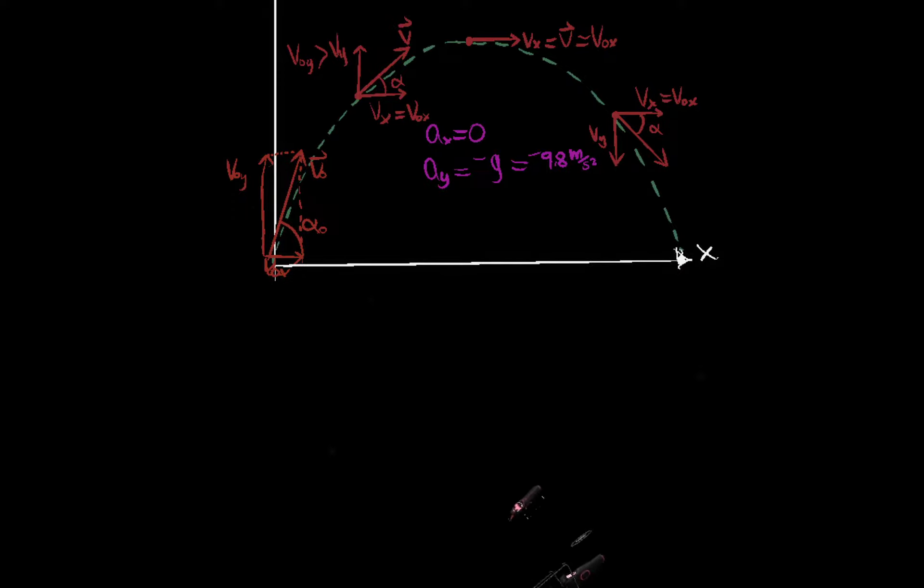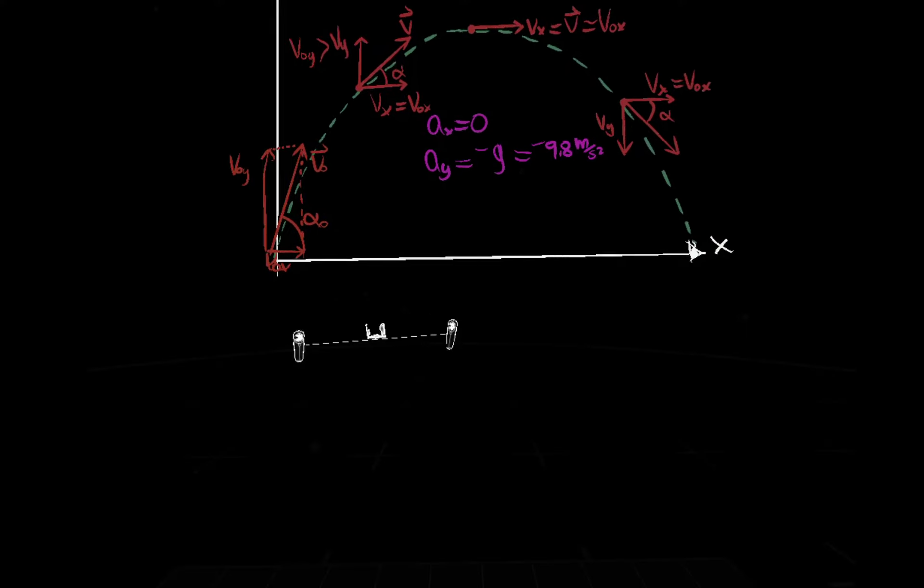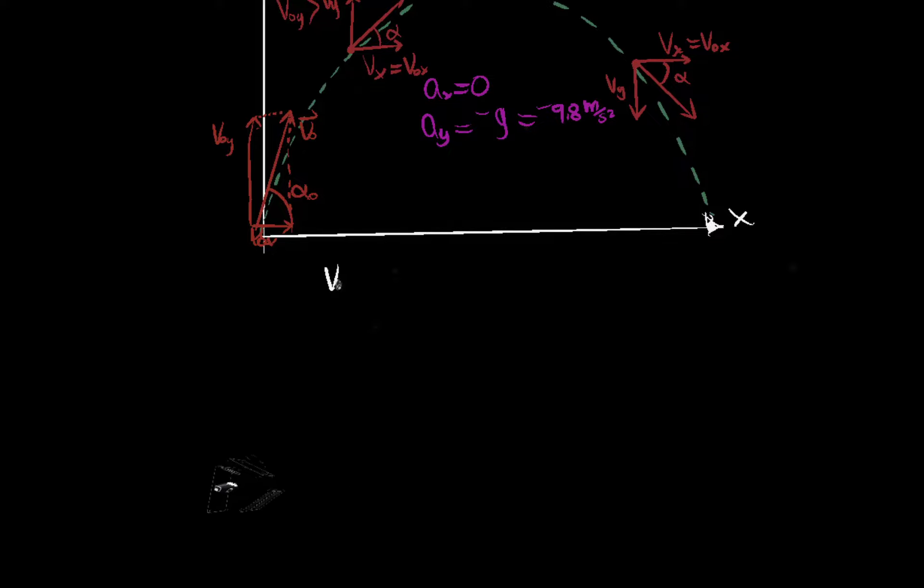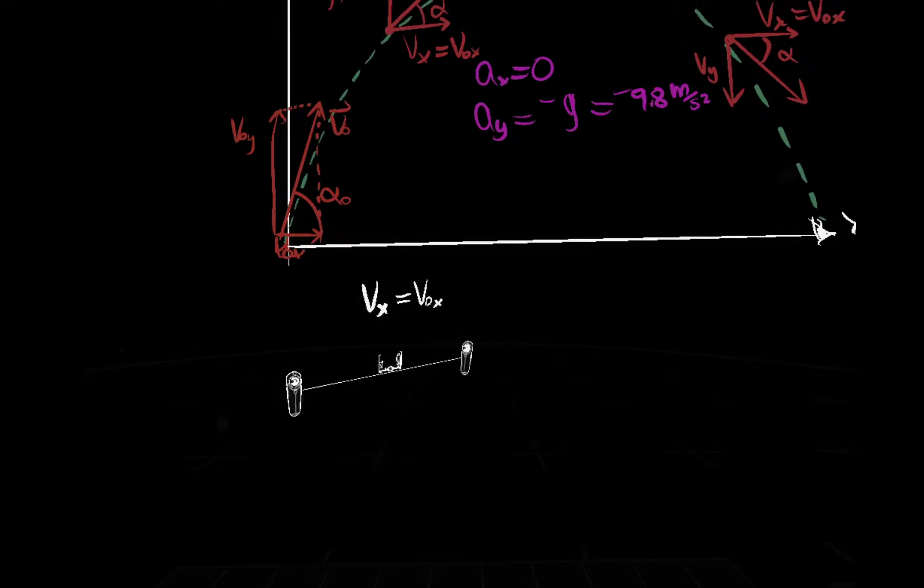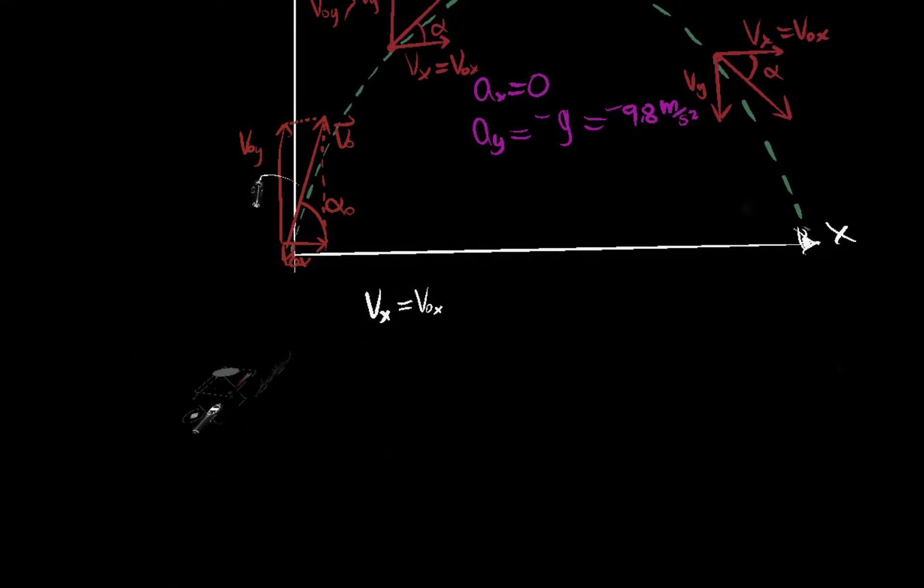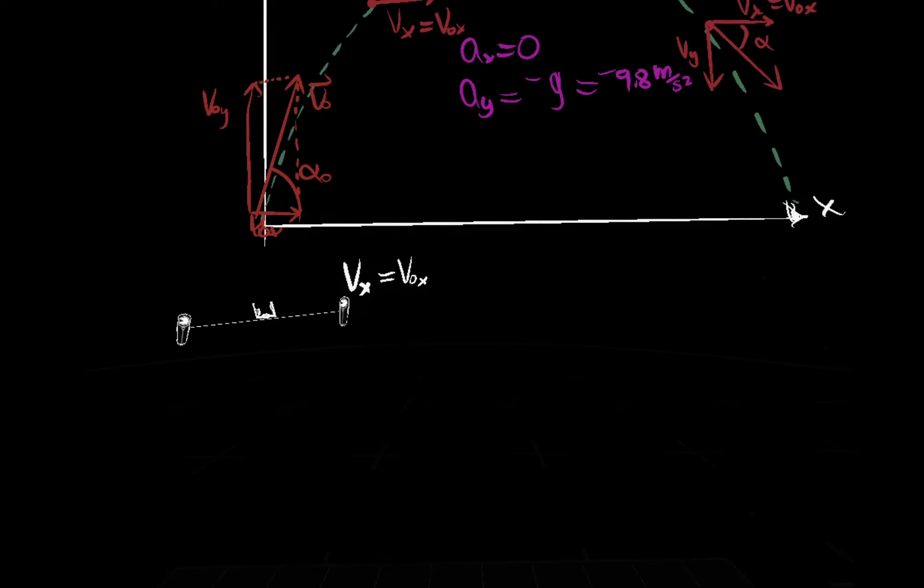So v x is always constant. V x is always constant. And so that means that at all times, v x is equal to v naught x. And if we look at this initial velocity picture, here, this triangle, or this velocity, initial velocity vector broken up into its components.